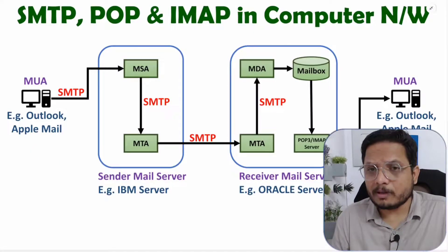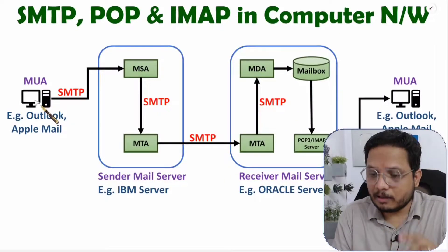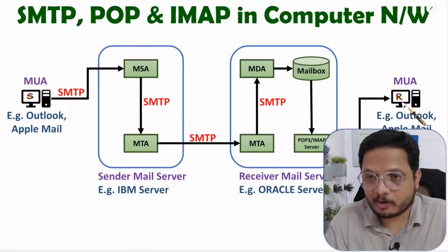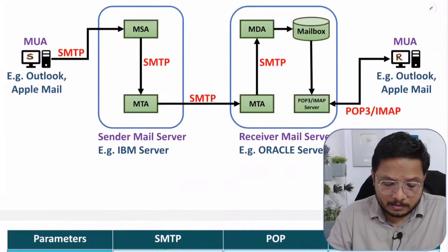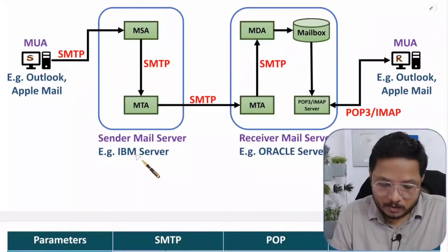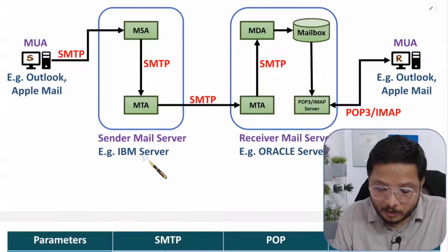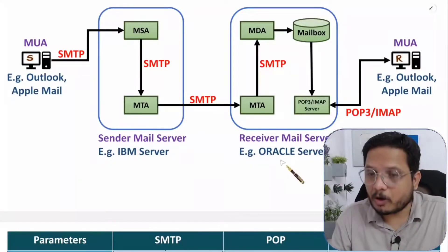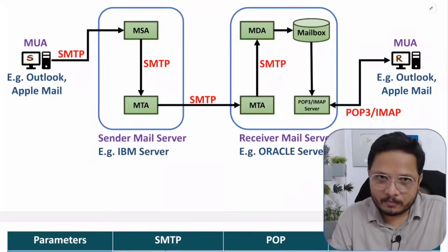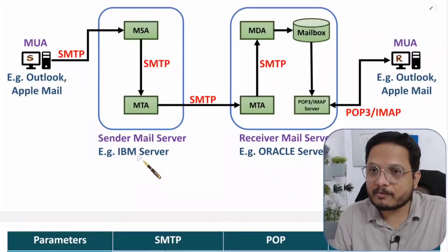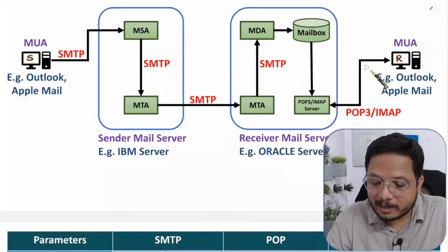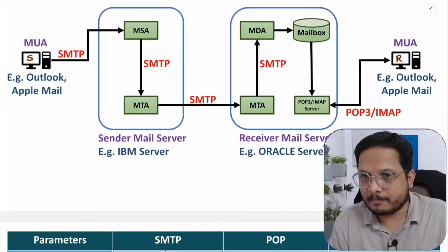Now let us consider this computer is forwarding email to another computer. This computer will be the sender (S) and this computer is the receiver (R). This sender computer belongs to IBM, so whenever this computer forwards an email, that email will be given to the IBM server first. The receiver belongs to Oracle, so delivery to that computer will be done by the Oracle server. The email goes from the sender to the IBM server, then IBM server forwards it to the Oracle server, and then Oracle server retrieves that email to the receiver.